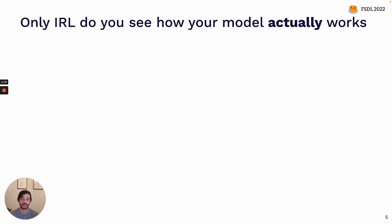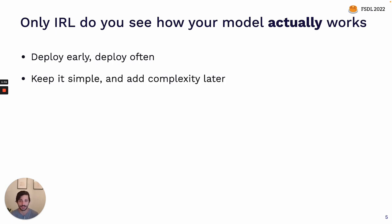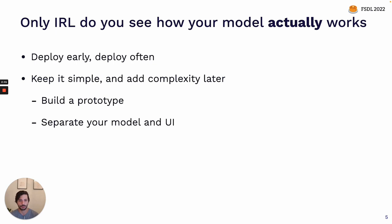It's really important to get your model into production because only there do you see if it actually works, if it actually solves the task that you set out to solve. The technique we're going to emphasize is much like what we use in other parts of the lifecycle: getting an MVP out early, deploy early, deploy a minimum viable model as early as possible, and deploy often. We're also going to emphasize keeping it simple and adding complexity later.